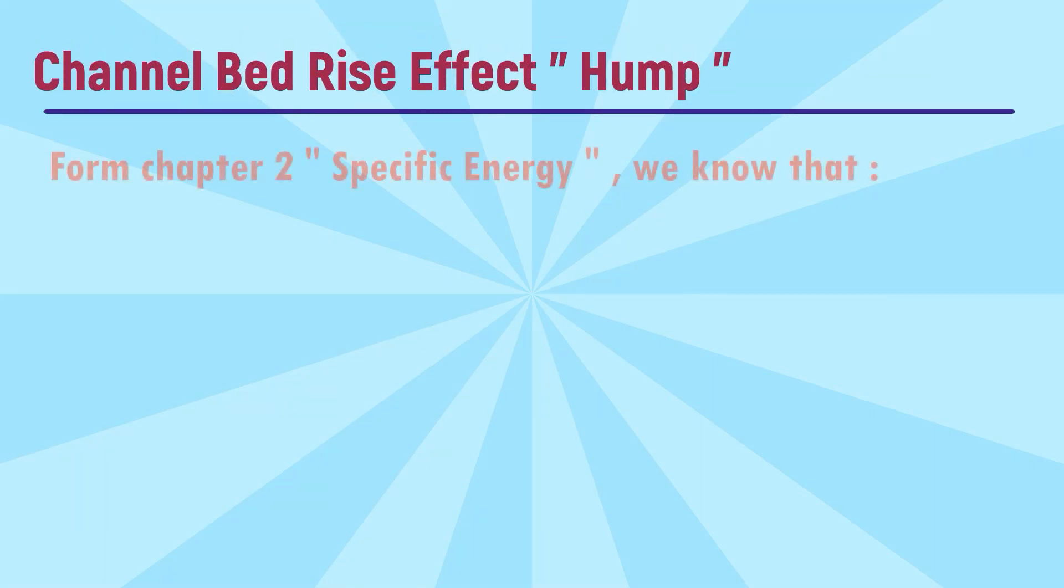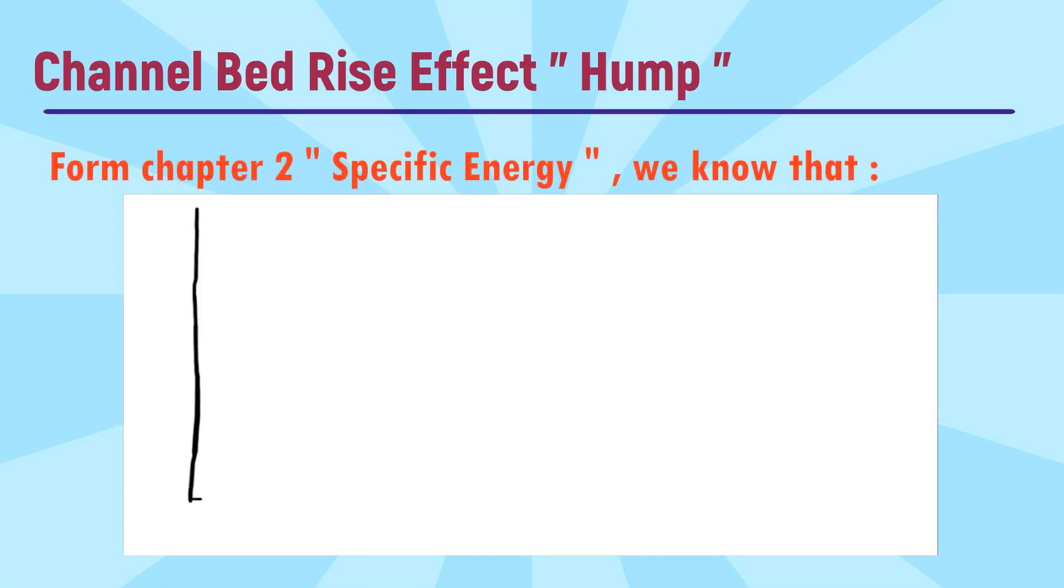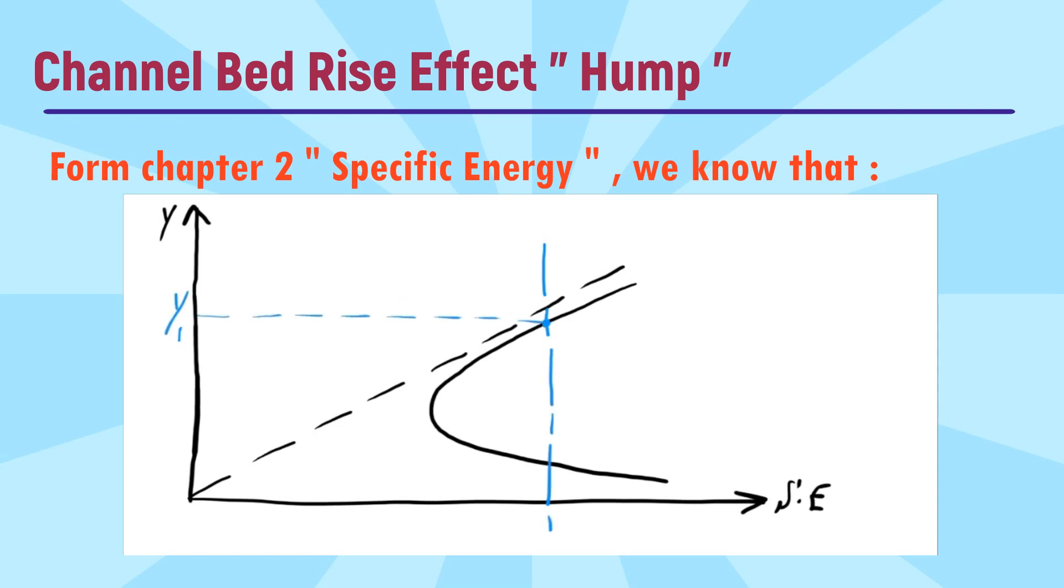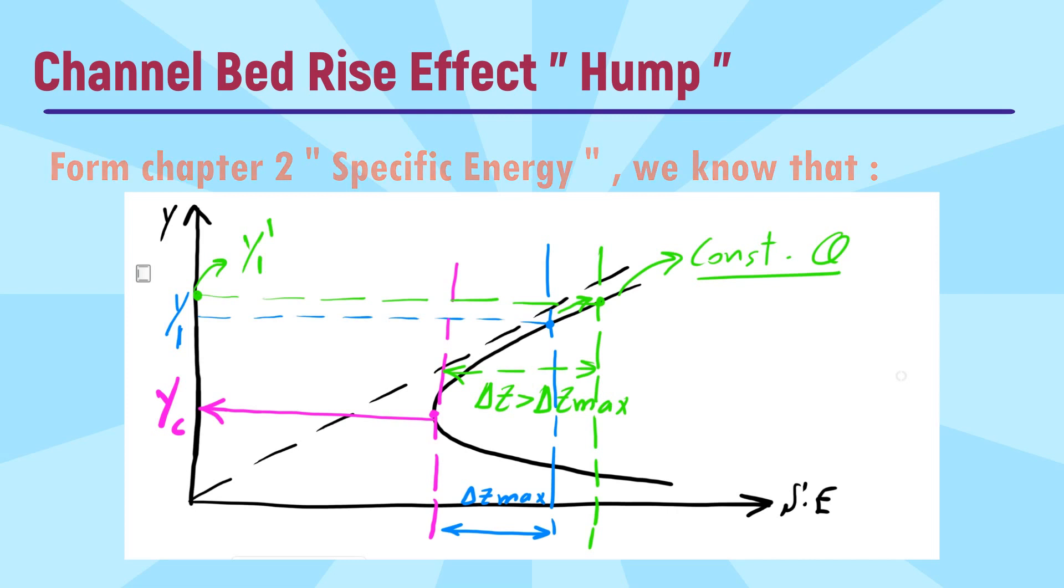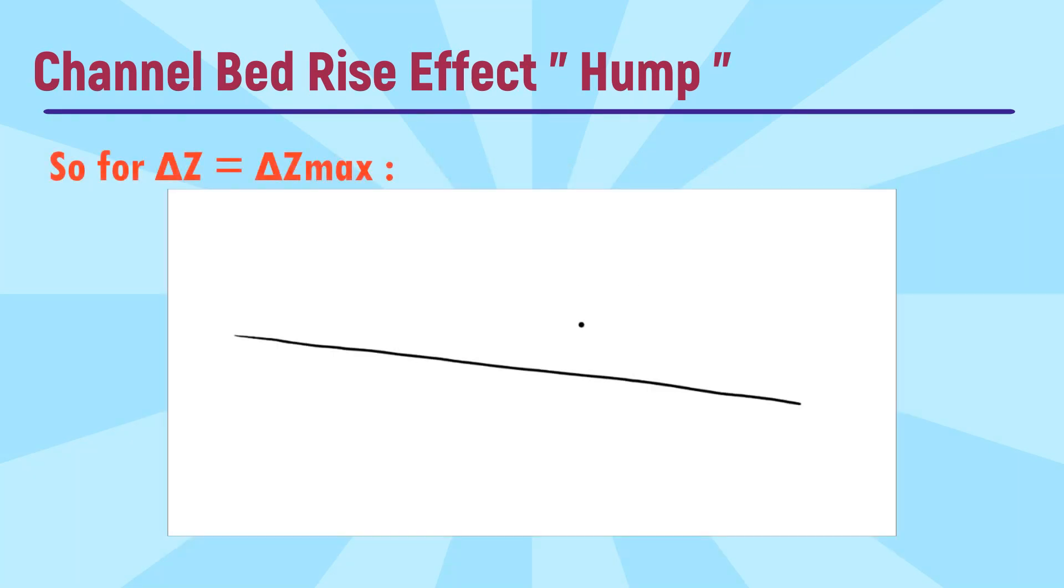What is the effect of bed rise, also known as hump? From chapter two specific energy we know that the water depth over the weir will equal to yc, or the critical depth.